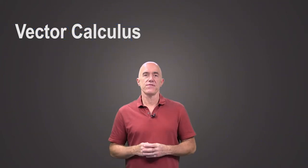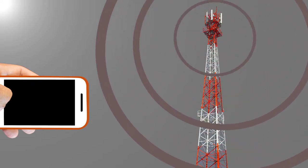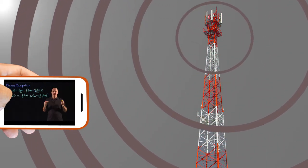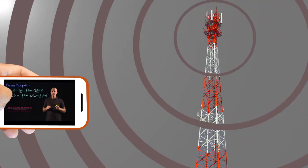Let me give you a few examples. A cell phone tower radiates electromagnetic waves in three dimensions, and these waves can be described by Maxwell's equations, written in the language of vector calculus.